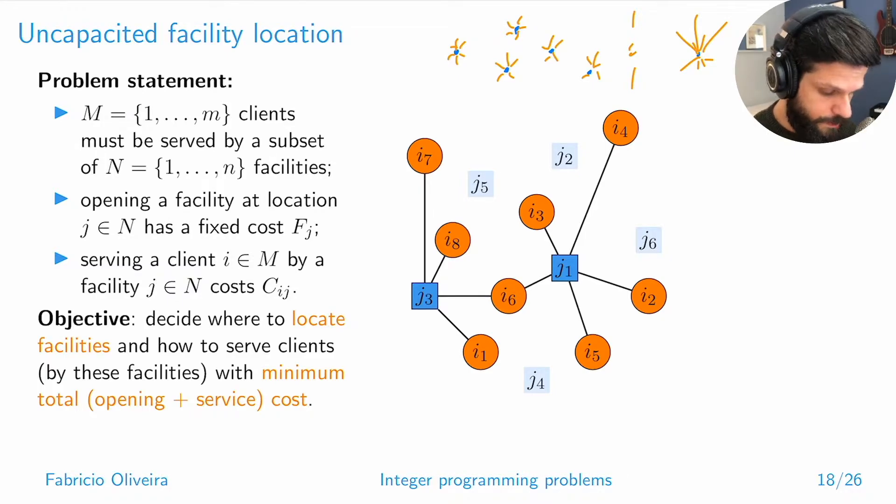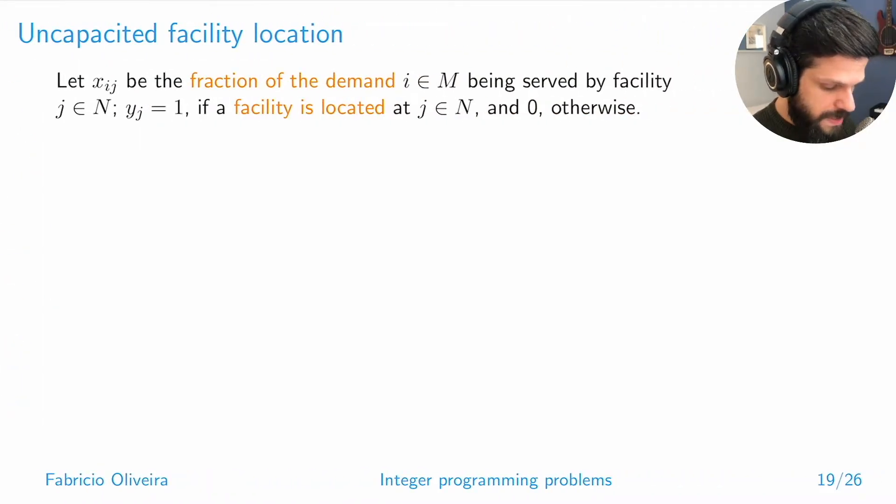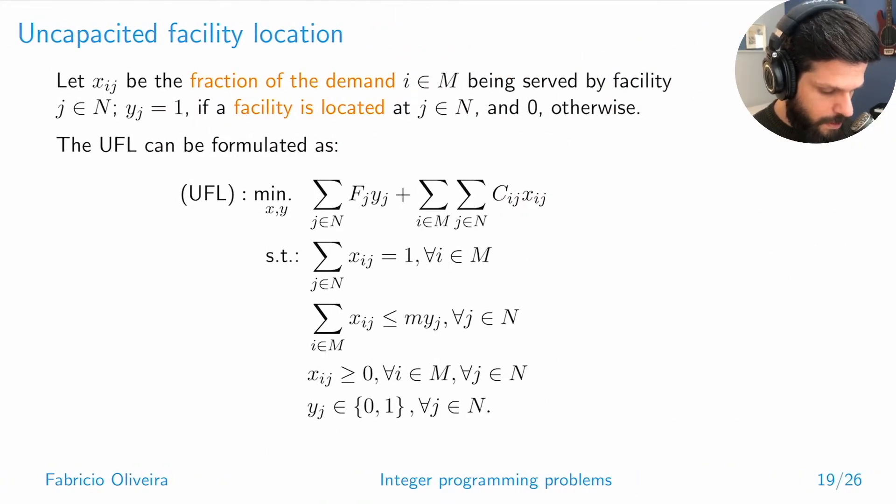The formulation is similar to what we've been seeing. The difference now is it's a mixed integer program. We have a decision of locating the facility, which we model as a binary variable y_j. We also have a continuous variable x_ij that models the fraction of the demand being served. All these variables are bounded between zero and one but are continuous. This option has an impact on the quality of the formulation, as we'll discuss later.